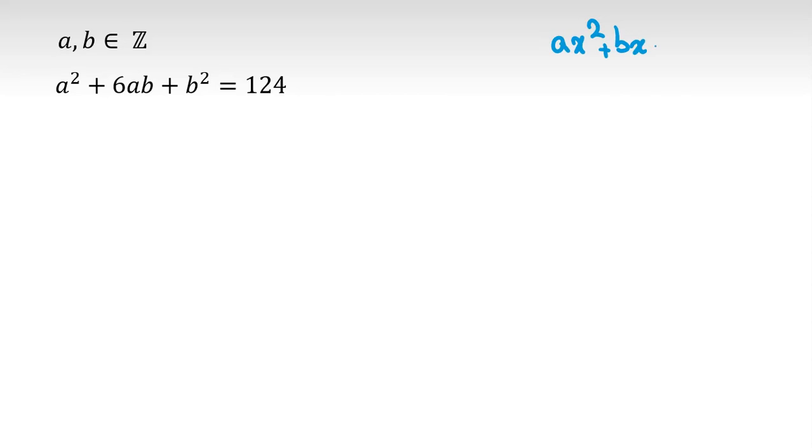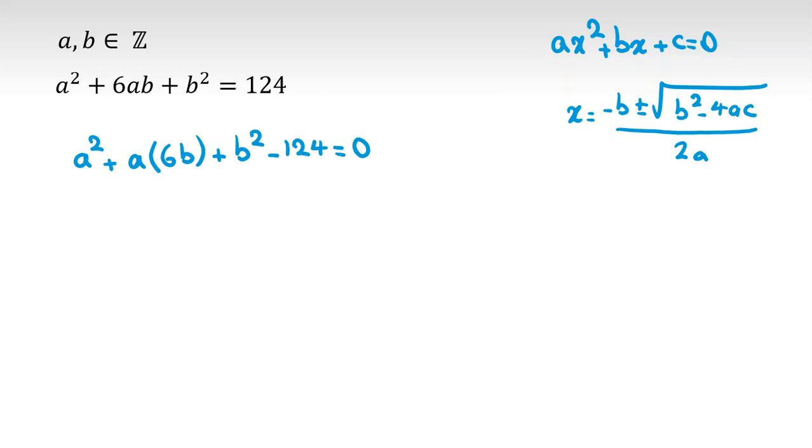If you have ax squared plus bx plus c equal to 0, then x equals negative b plus minus square root of b squared minus 4ac all over 2a. Now, I can write this as a quadratic equation in terms of a. It is a squared times 1, times a, times 6b plus b squared. Take 124 to left hand side minus 124 equals 0, so a will equal - let's use this formula.